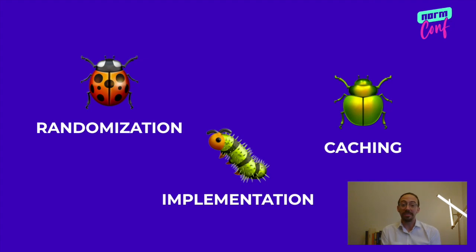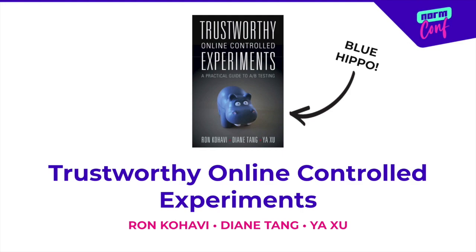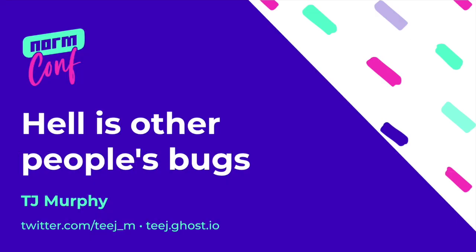So that's it! Randomization, implementation, and caching are the three areas you're most likely to find bugs in A-B testing. If you want to become an expert, pick up Trustworthy Online Controlled Experiments — the Blue Hippo Book. I drew heavily on it for this talk. Happy bug hunting and enjoy the rest of NormConf.